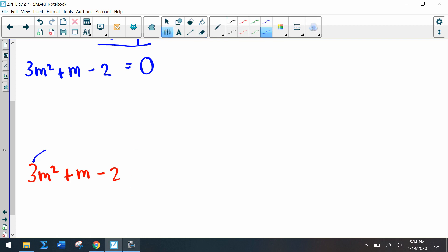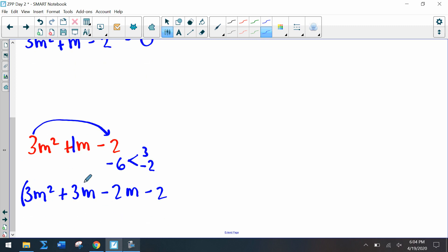But actually I don't need it to equal zero because I just have to factor it. Okay, three times negative two is negative six, so factors of negative six that add up to one. So I have three and then negative two.